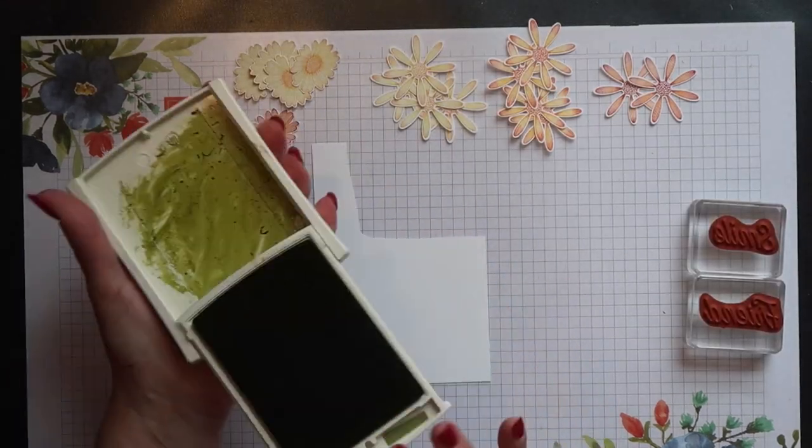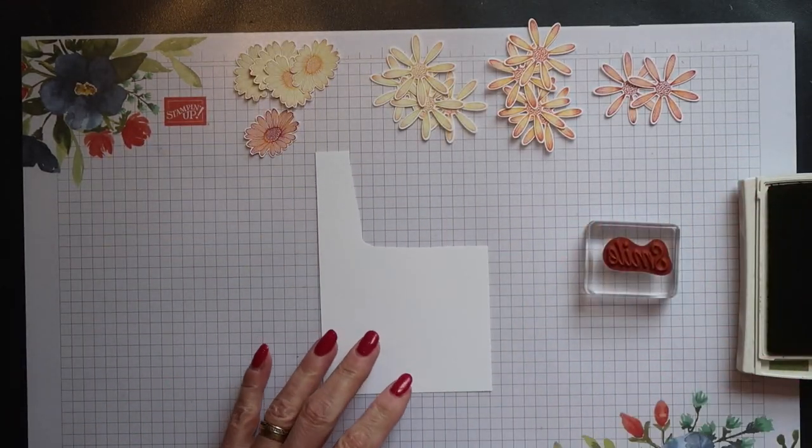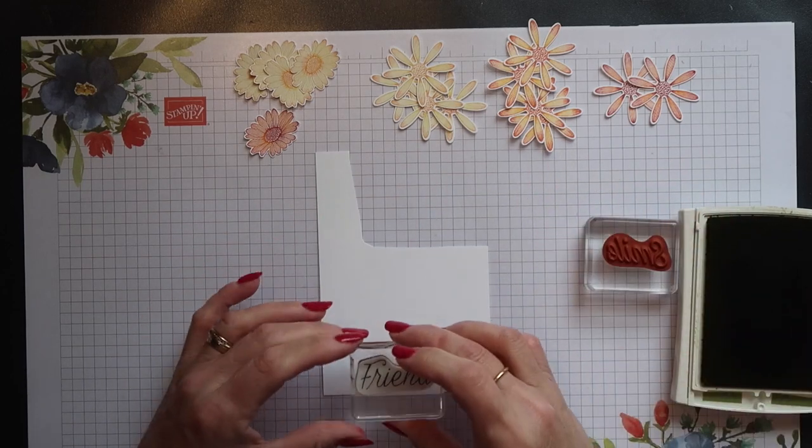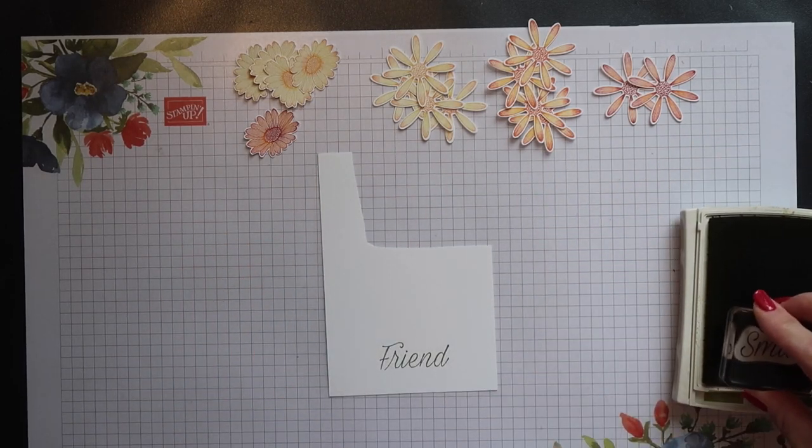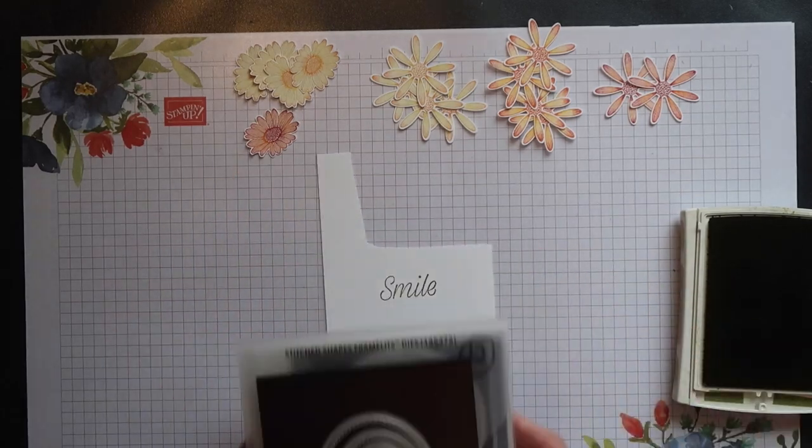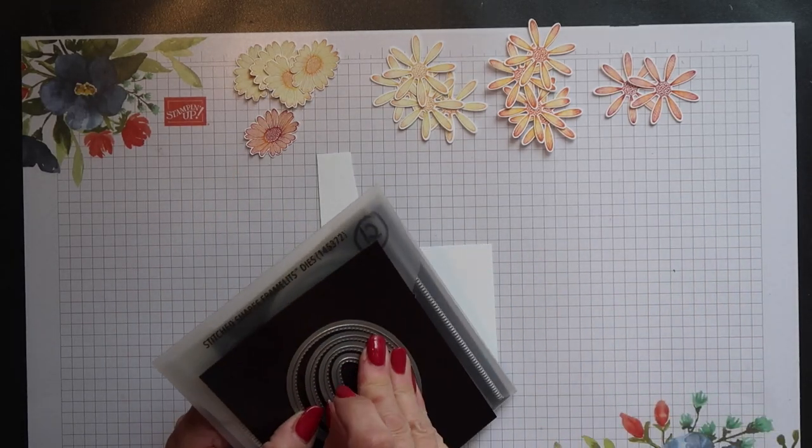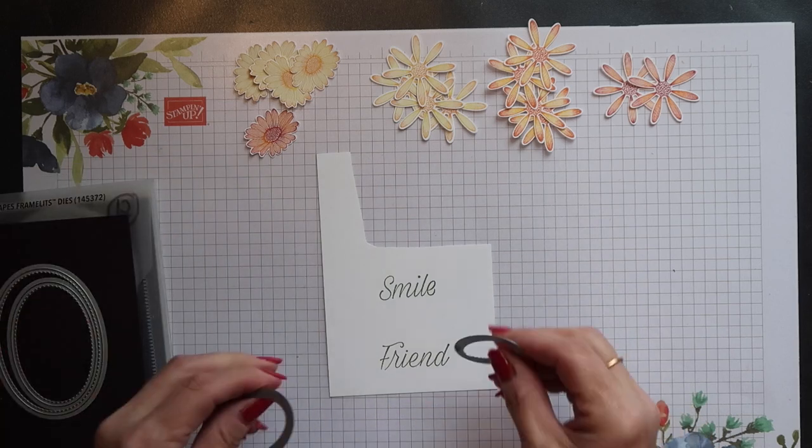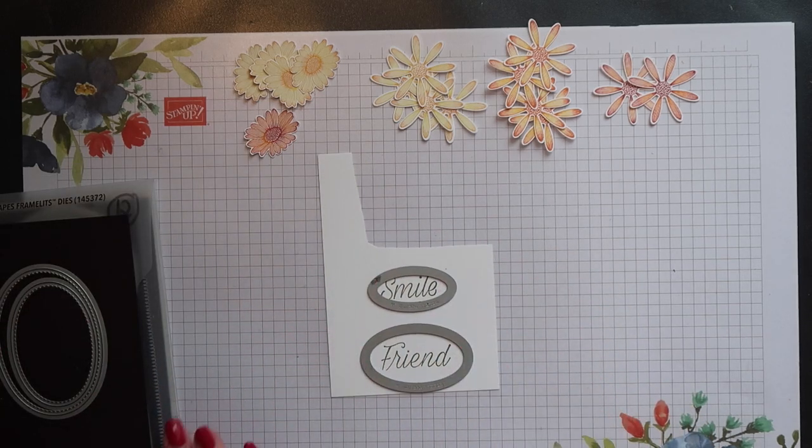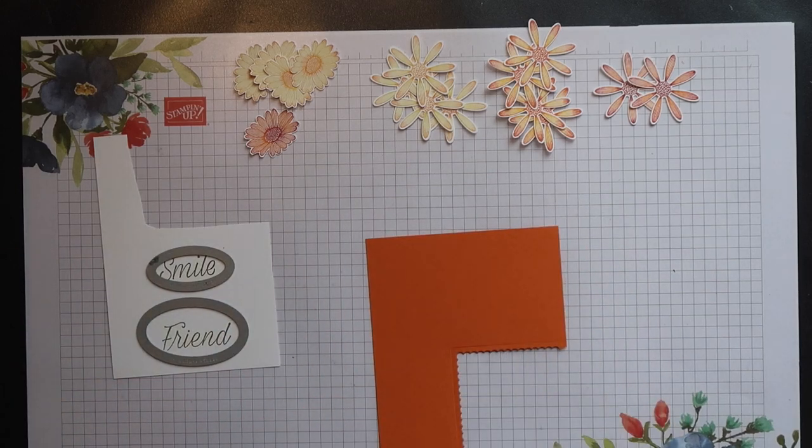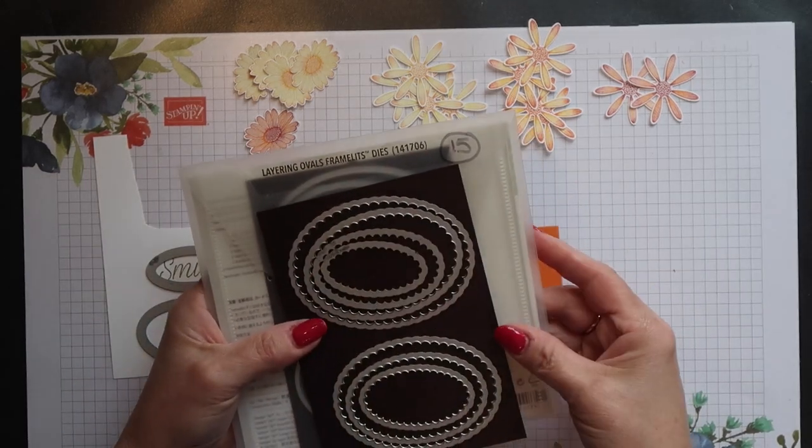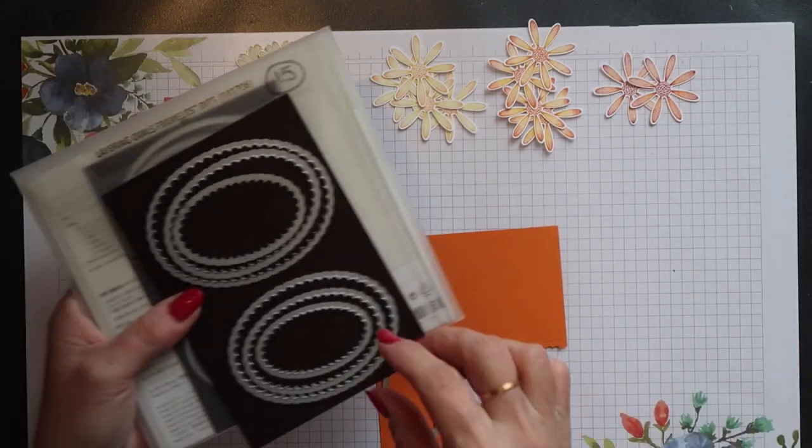I'm using both the small sentiments from this set and I'm going to stamp them using Old Olive ink. I'm going to cut these out using the two smallest stitched shapes oval framelits. Then I'll create mattes from Pumpkin Pie card using the layering ovals framelits.